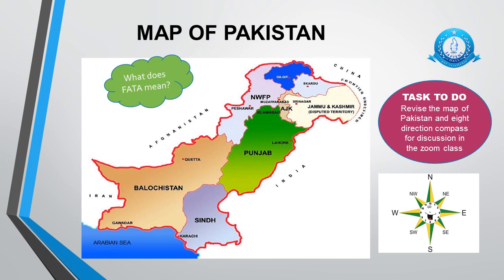Have you ever heard about FATA? It stands for Federally Administered Tribal Areas. It stretches from north to south along the Pak-Afghan border. FATA is divided into 7 agencies: Khyber, Kurram, Orakzai, Mohmand, Bajaur, North Waziristan, and South Waziristan. Although there are 6 additional small pockets of tribal areas known as frontier regions. Your task is to revise the map of Pakistan using the 8-direction compass for discussion in the Zoom class.